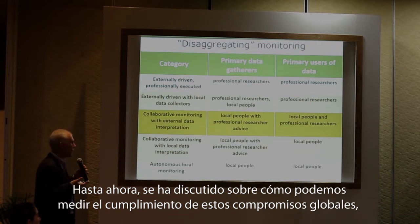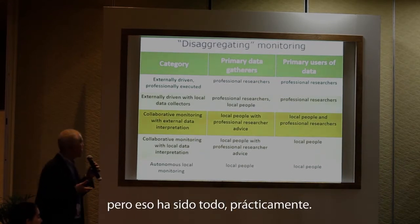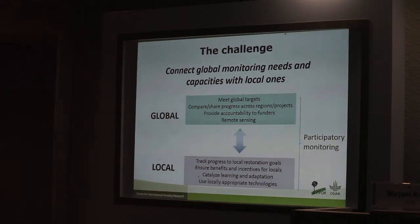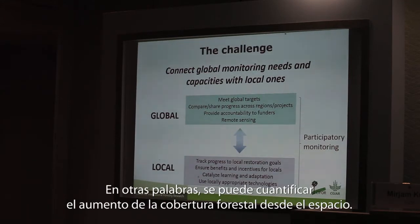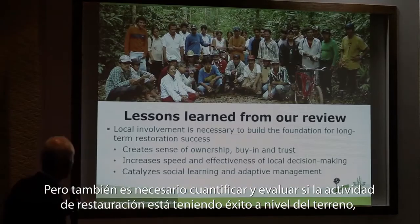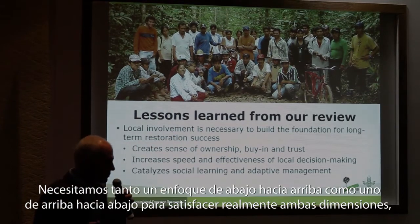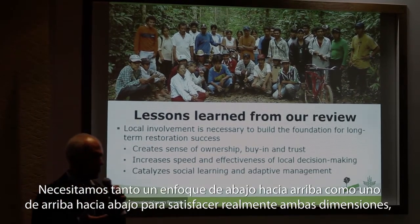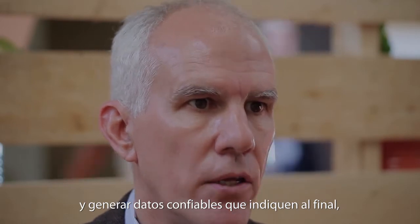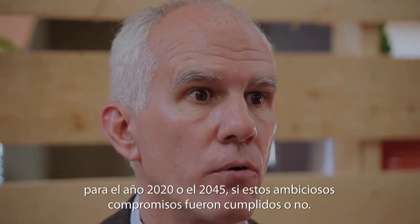So far there have been conversations on how we could measure whether these global commitments will be achieved, but it stays there pretty much, and that is a very top-down approach which has its values. You can quantify forest cover gains from space, but you also need to quantify and gauge whether the restoration activity is succeeding at the ground level, because restoration starts on the ground. We need both a bottom-up and a top-down approach to generate reliable data that tells, by 2030 or 2045, whether these ambitious commitments were achieved or not.